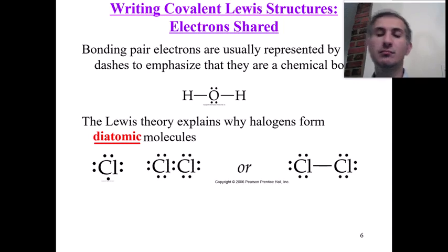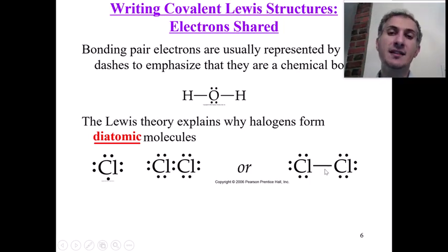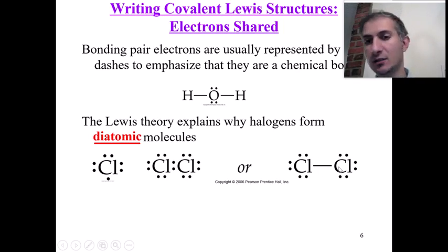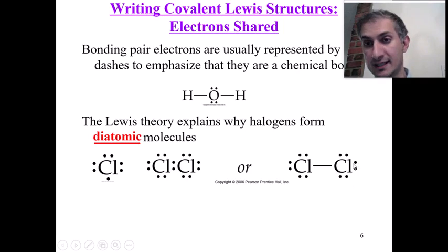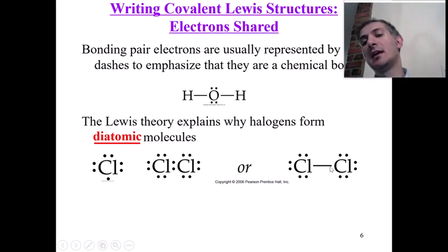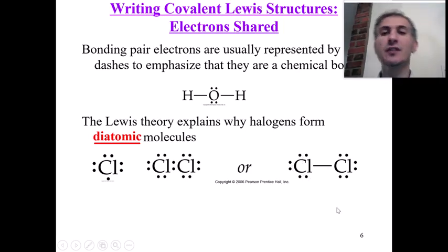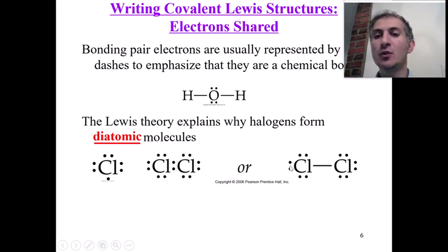For Cl2, chlorine is group number seven so we draw seven valence electrons for each Cl atom. We connect the single electrons to make one bond. The remaining electrons form lone pairs: each chlorine has three lone pairs and there are two bonding electrons shared between them. So each chlorine atom has three lone pairs and one bond.